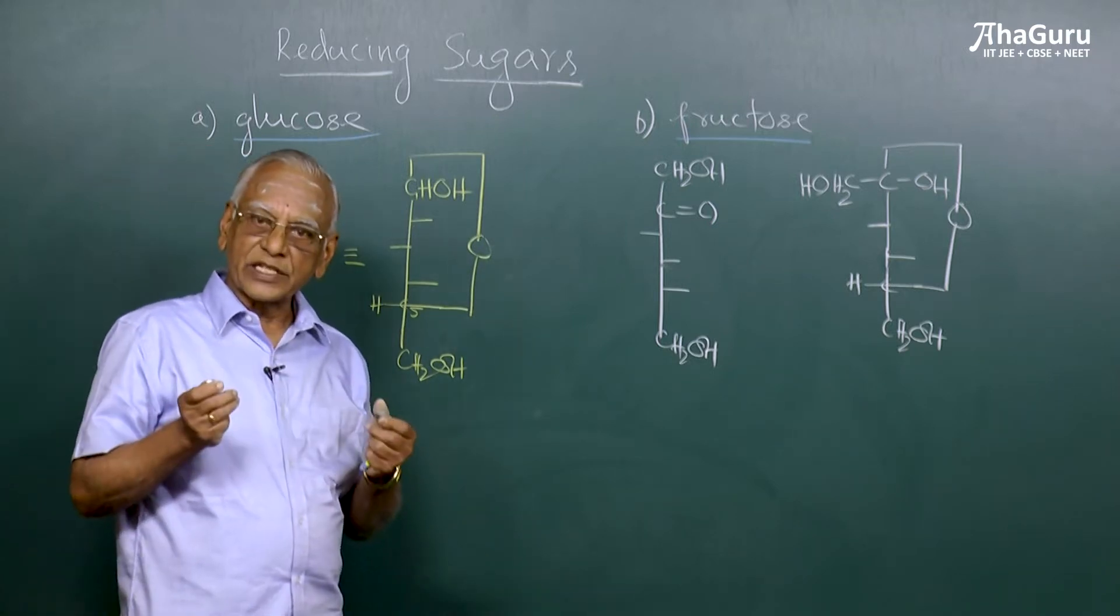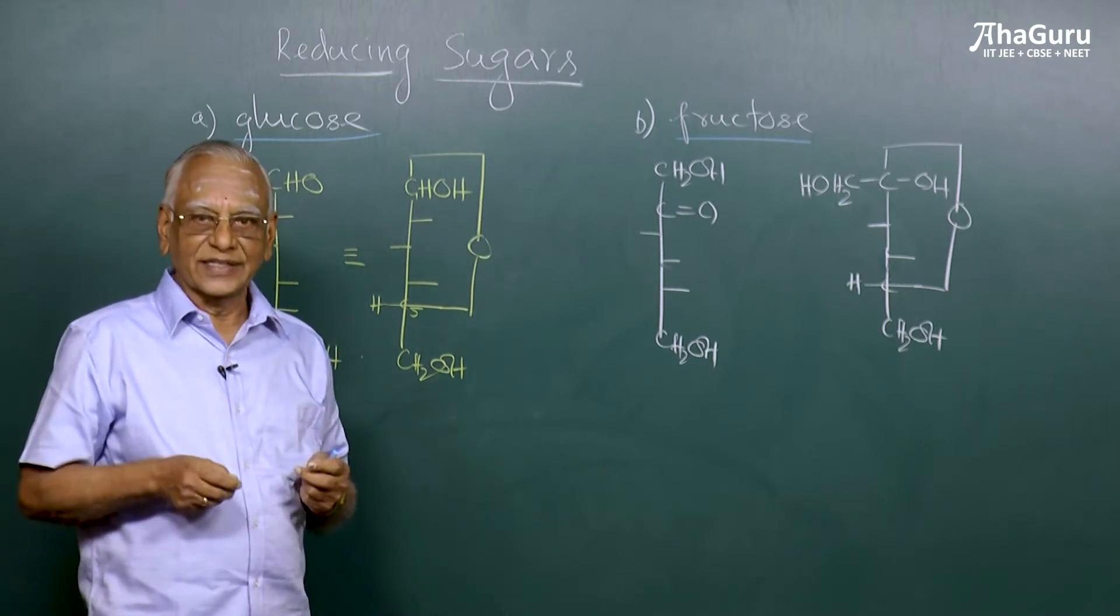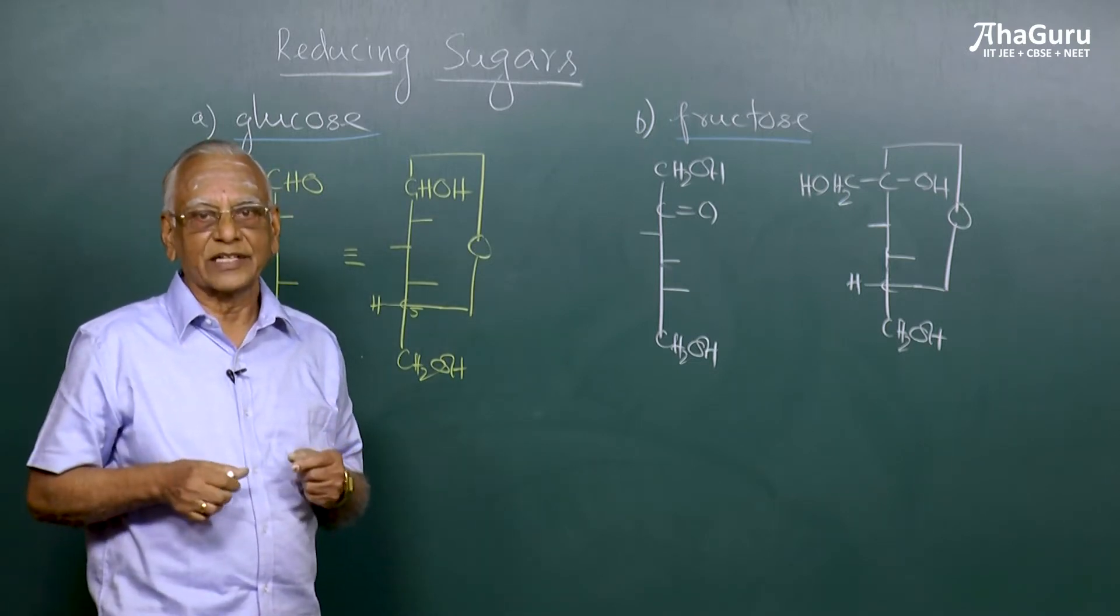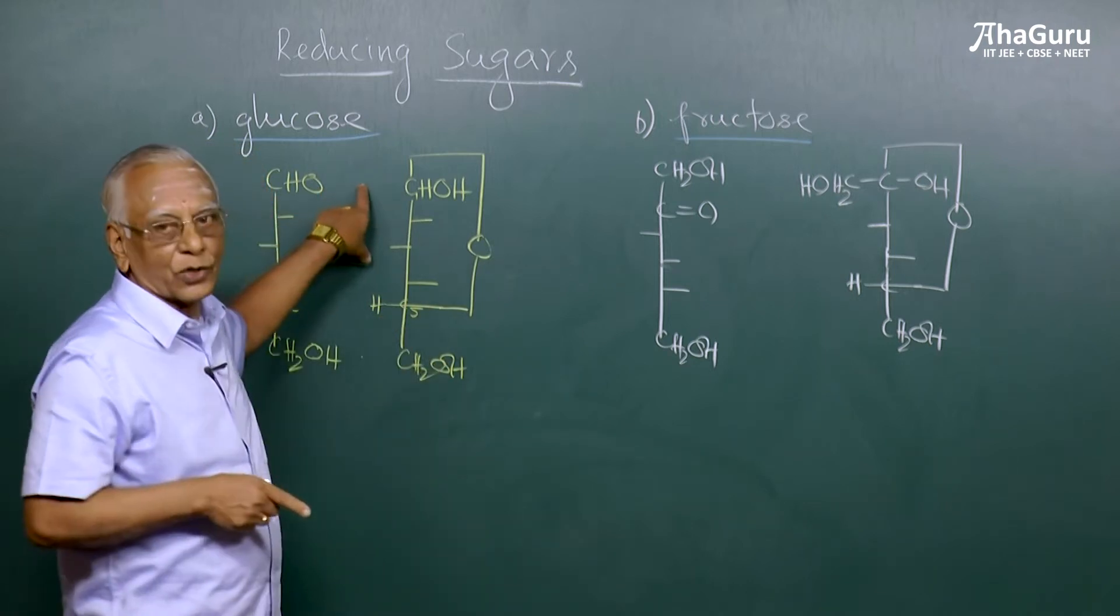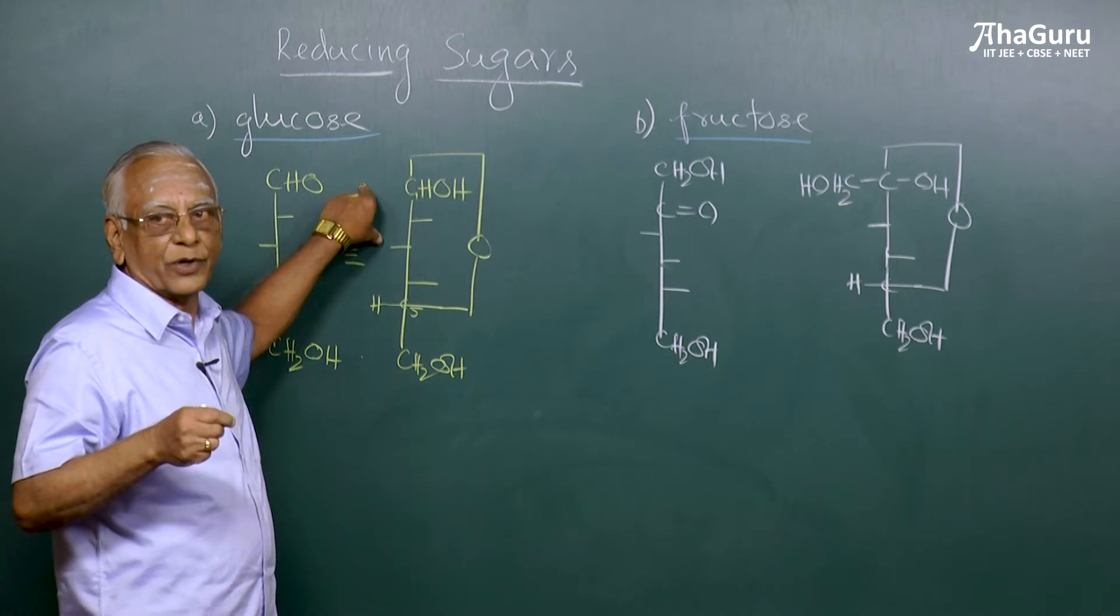Now how do we distinguish reducing sugar from non-reducing sugar? By the use of Tollens reagent. Tollens reagent is nothing but ammoniacal silver nitrate. You dissolve glucose in water, add a drop of Tollens reagent and put it in boiling water.